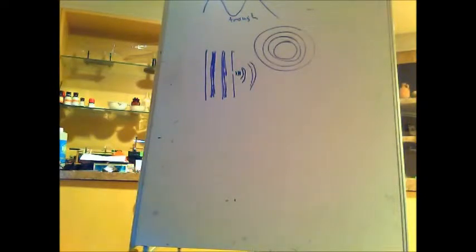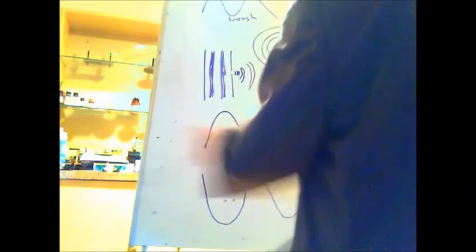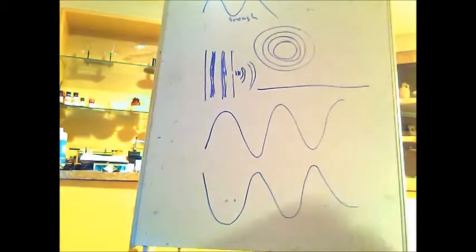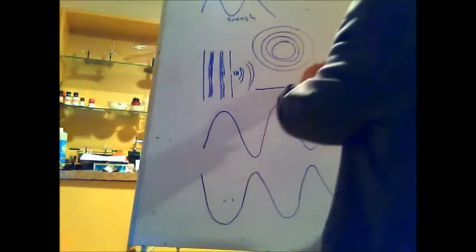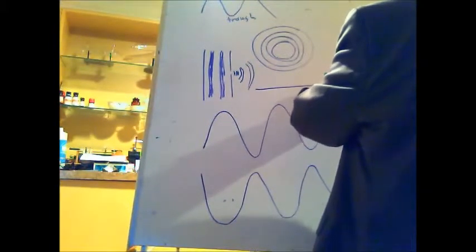Another property that waves have is that they interfere with one another. We can have a wave moving this way, and another wave coming this way. They're both sine waves but shifted by 90 degrees, and because of that, this one actually cancels the other out. If the amplitudes of the waves are exactly the same but reversed and exactly aligned, what you get from the combination of the two waves is basically a straight line — no wave at all. That's called destructive interference.